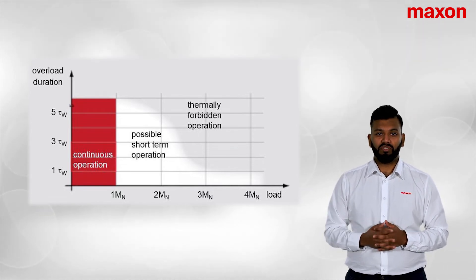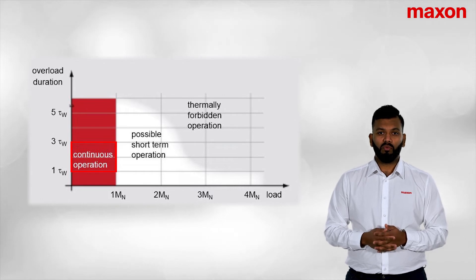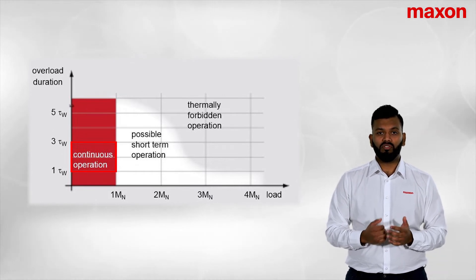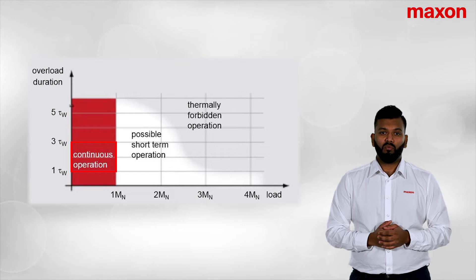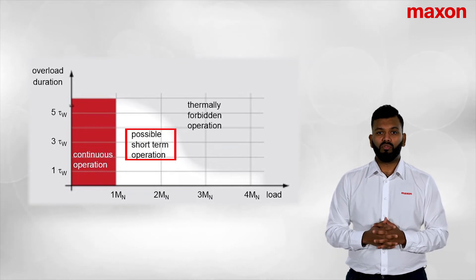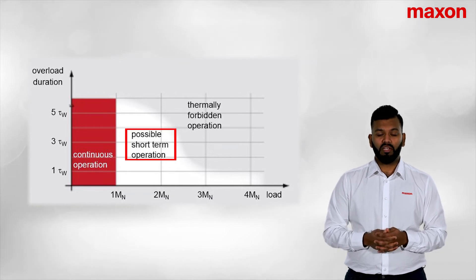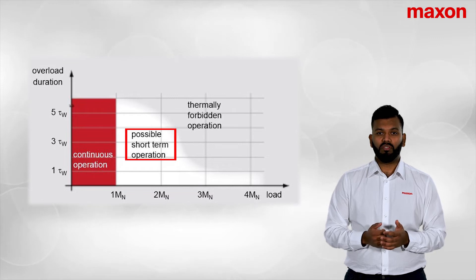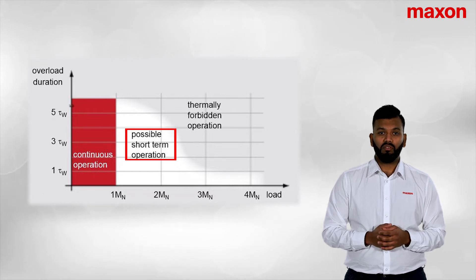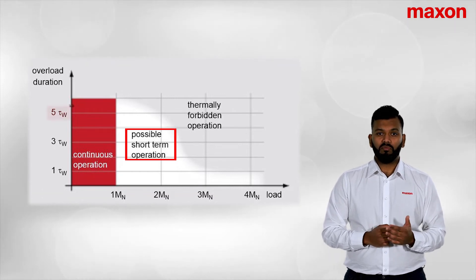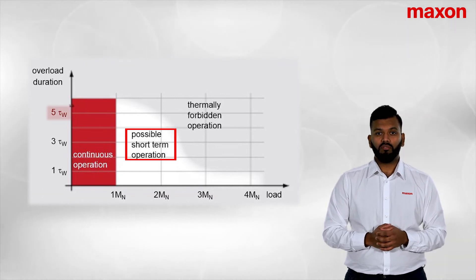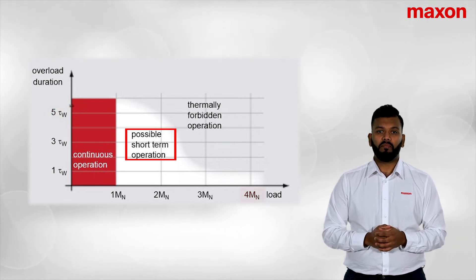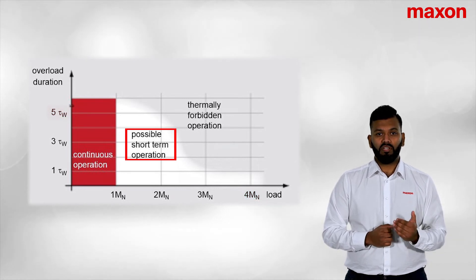Looking at the diagram: the red region is our continuous operating range where you shouldn't see any issues running your motor, as long as you're within the limits. Once we push into the white region — the short-term operating range — you'll see that you're limited in how much you can push the motor. You can go as high as five times the thermal time constant or four times the torque limit.